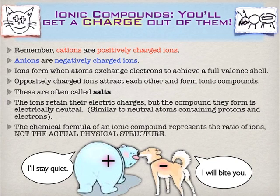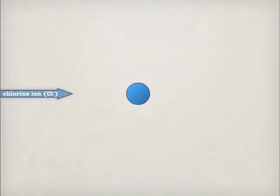The important thing to understand is that although you have a formula like sodium chloride, NaCl, that actually represents a ratio of ions and not the whole physical structure. Let's take a look and see what that means.